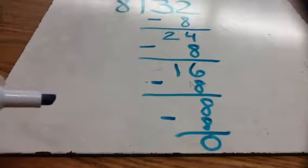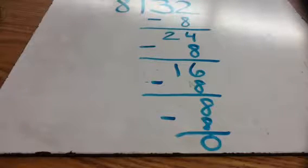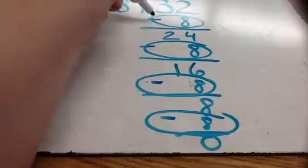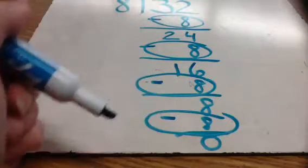Now, to find my answer, I just have to figure out how many 8's I took away from 32 until there was nothing left. So I have 1, 2, 3, 4 eights that I took away. Notice that I circled where those subtraction symbols were. I took away 4 eights to equal 0. So 32 divided by 8 equals 4.